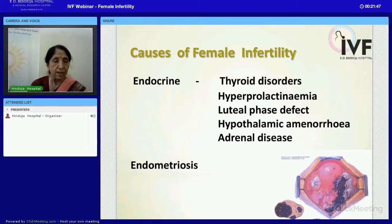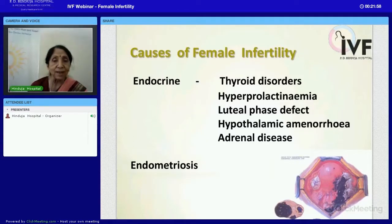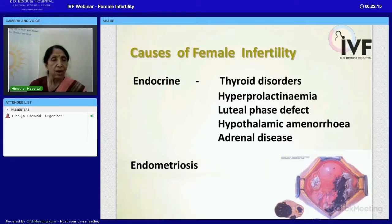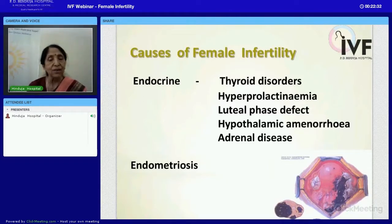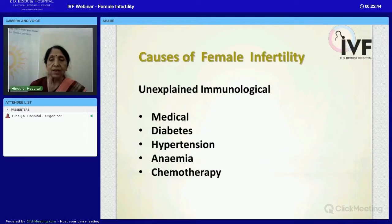Once the egg is released, the luteal phase must be adequate to support pregnancy. The corpus luteum and hormones coming from it must sustain the pregnancy. Additionally, the adrenal gland — situated just above the kidney — secretes male-type hormones that can interfere with the entire reproductive system. Endometriosis, of course, has already been discussed.